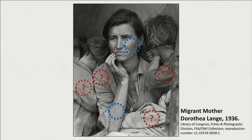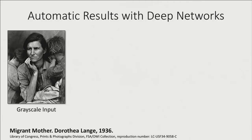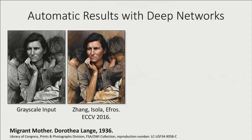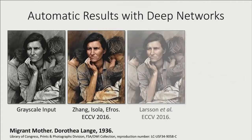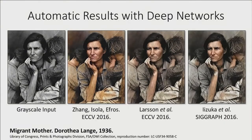The shirt can take on one of many different colors. Furthermore, if we look at the baby's blanket as well as the children's shirts, they can all take on different colors. So this is actually a very large space, even combinatoric. Our result can only choose one of these colorizations. And interestingly, if we look at the results from different methods, they choose something very similar — which in the end is perhaps not what the user wanted.